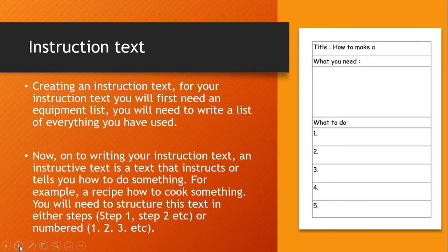Okay, welcome back. You should have completed your research and your design — you are now on the instruction text. For your instruction text, you will first need an equipment list. You will need to write a list of everything used. For example, how to make a volcano through paper mache, through art, or through a PlayStation game — you need to list every item you would have used. If you're painting, you need the canvas, the paints, the paintbrush.